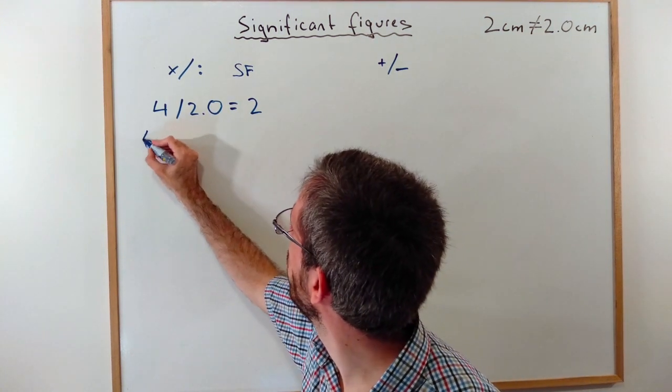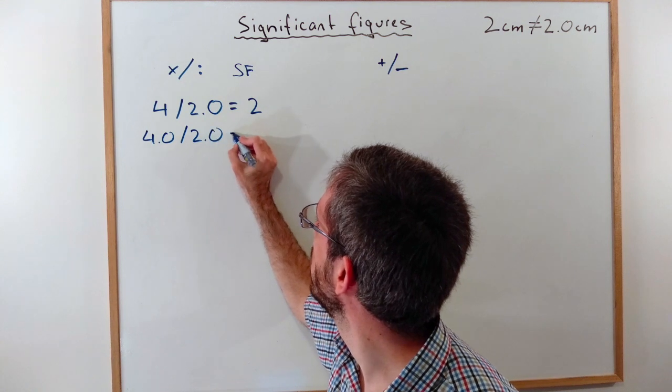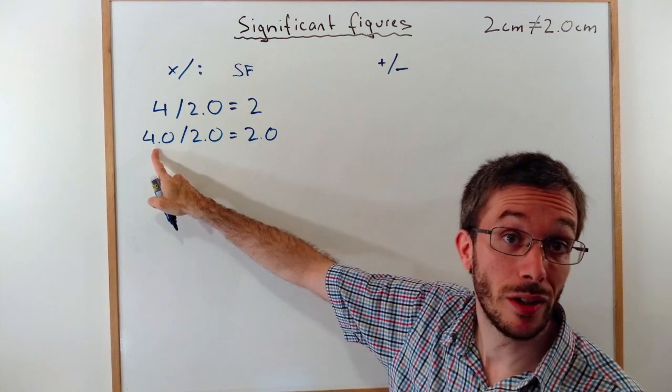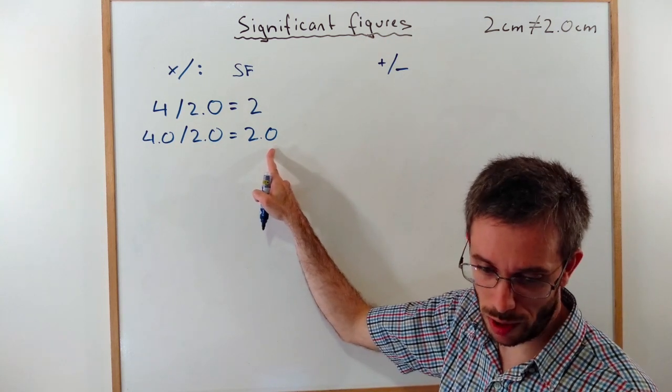If I had 4.0 divided by 2.0, I would write down 2.0 because 2 significant figures, 2 significant figures, so my lowest amount was the 2, so I write the answer with 2.